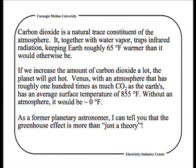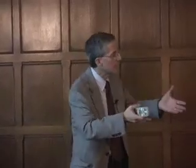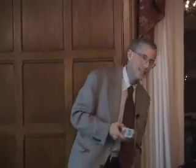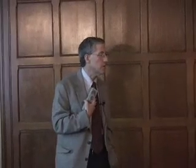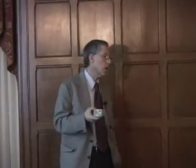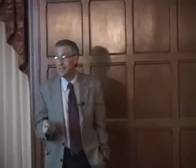Heat energy gets trapped. Some of the 70% gets trapped by the atmosphere, some by clouds — that's the greenhouse effect. CO2, which is about 365 parts per million of the atmosphere, is a trace constituent. Together with water vapor, it keeps Earth about 65 degrees Fahrenheit warmer. I used to be a planetary atmospheres astronomer, and the first planet I studied was Venus. Venus has an atmosphere of roughly 100 atmospheres of CO2, and the surface temperature is hot enough to melt lead. That is entirely due to CO2.